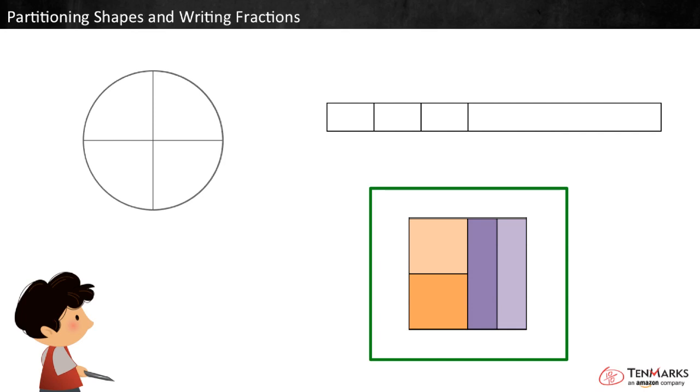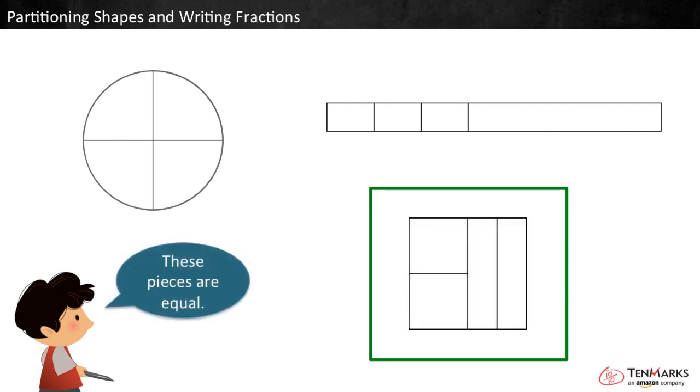So each of the four parts is half of a half. They are all the same size, even though they are not the same shape. These are equal parts.